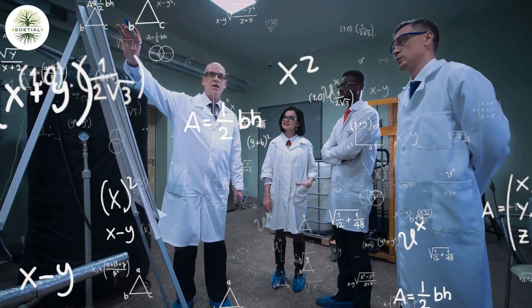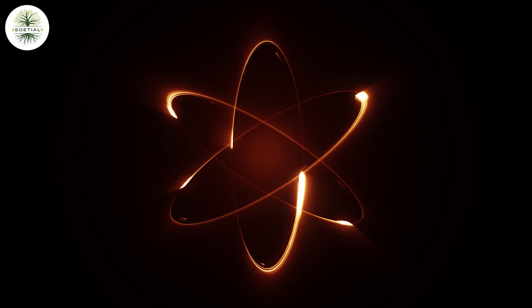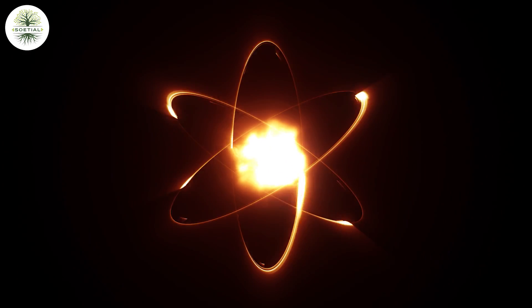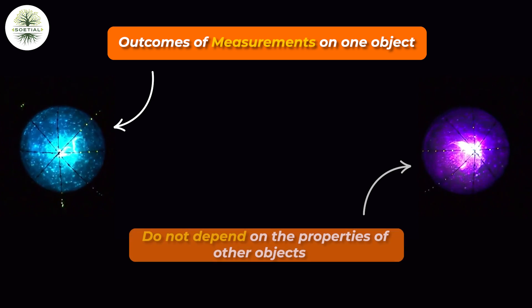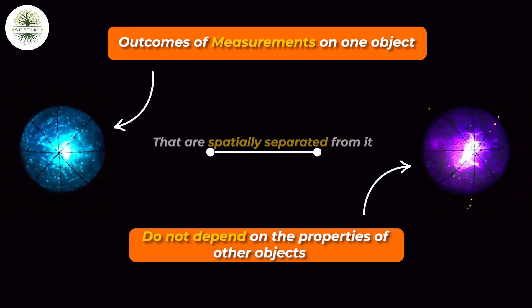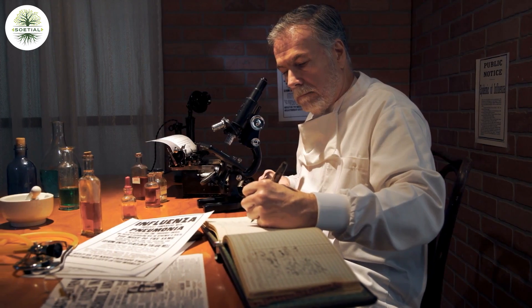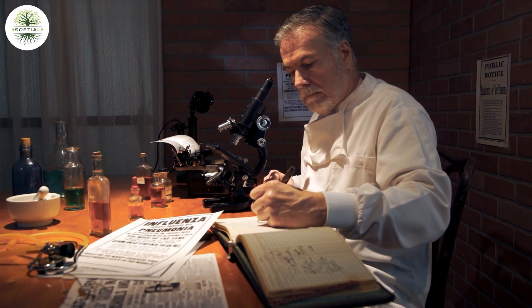The concept of local realism in physics refers to the idea that the physical properties of objects exist independently of observation, and that the outcomes of measurements on one object do not depend on the properties of other objects that are spatially separated from it. One of the key ways that physicists have proven that the universe is not locally real is through the concept of quantum entanglement.